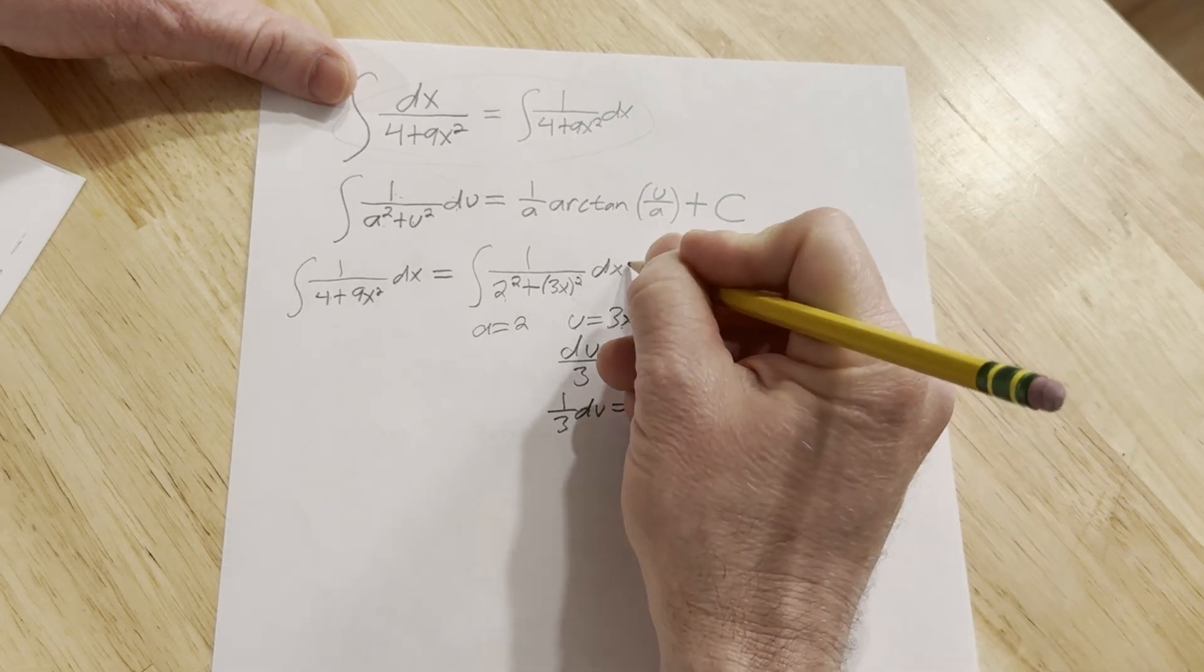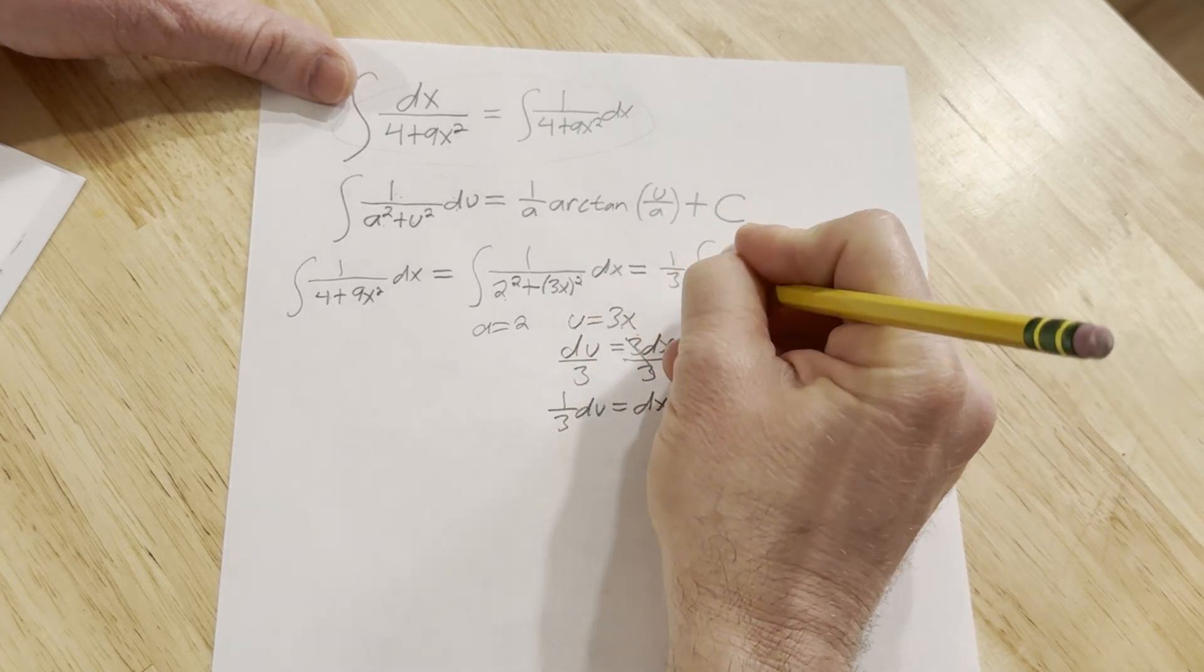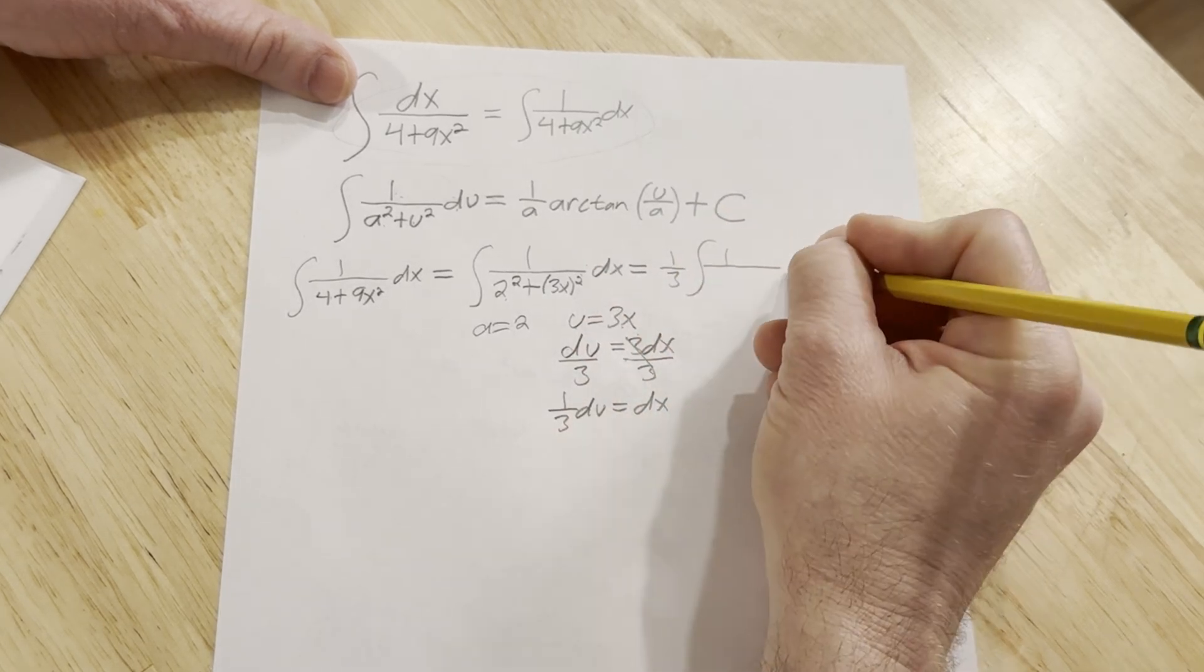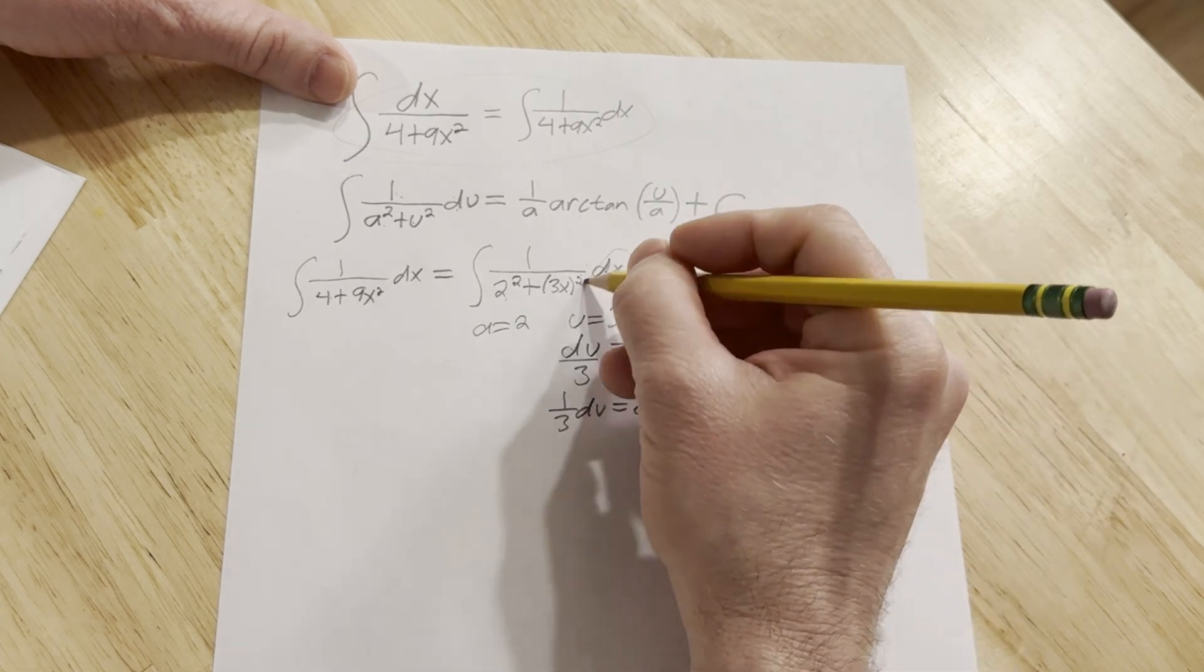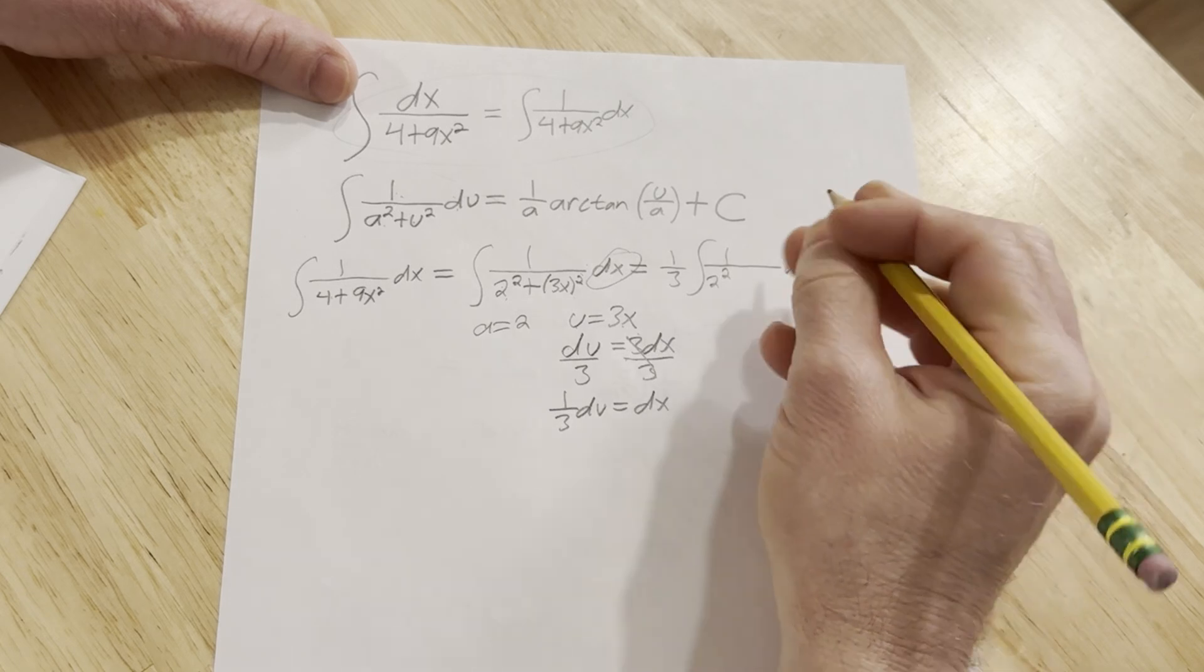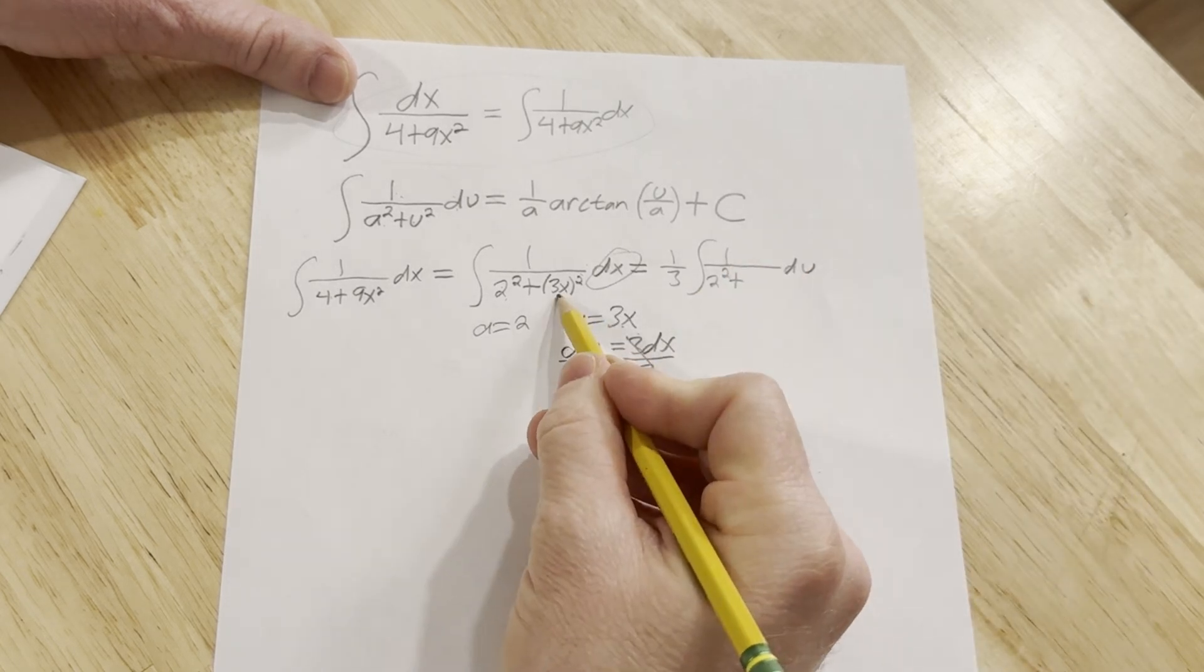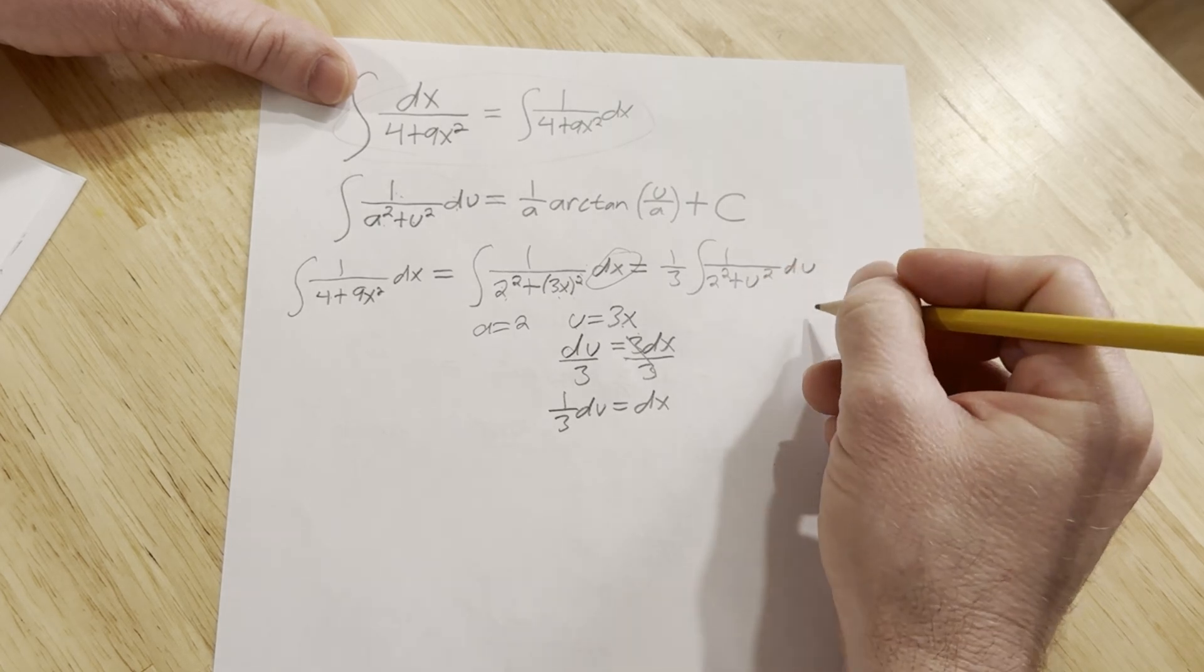Okay, so this is equal to... let's go ahead and replace the dx. It'll be 1/3 integral of 1 over du. So the only thing I've done so far is replace the dx. The 2 squared stays plus, and now instead of 3x, it's going to be u squared, or u rather. So it'll be u squared.